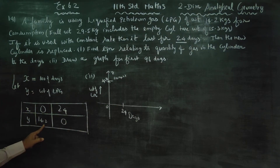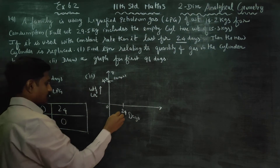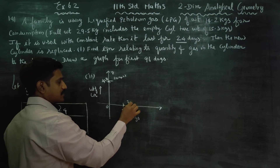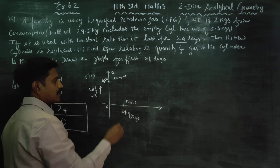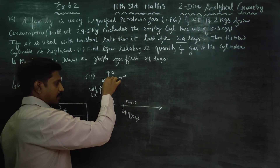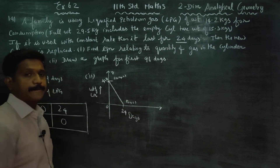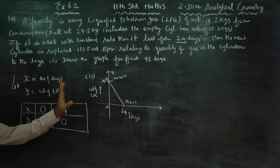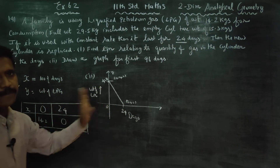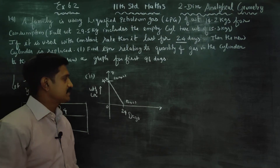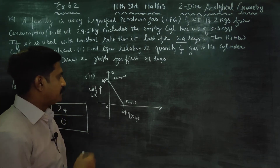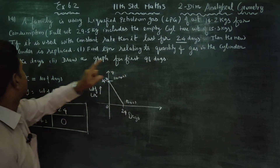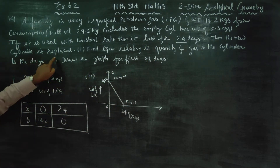The next point is (24, 0) — meaning at day 24, the gas is completely used up.